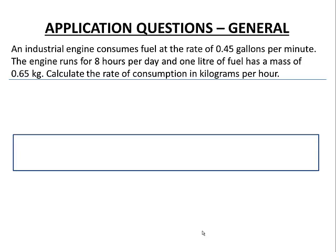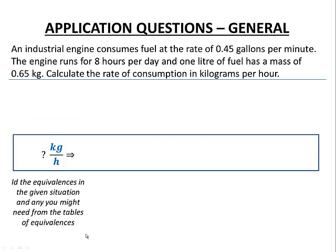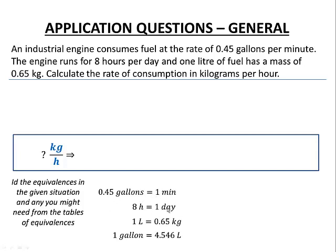Similar to our previous question, we start by identifying our desired rate: kilograms per hour. Continuing with our unit ratio technique, we identify equivalences from the given problem: 0.45 gallons is equivalent to one minute; eight hours is equivalent to one day; one liter of fuel has 0.65 kilograms. This last equivalence — one gallon is 4.546 liters — comes from our table of equivalences, not directly from the problem. We may need equivalences from tables or other sources as well.